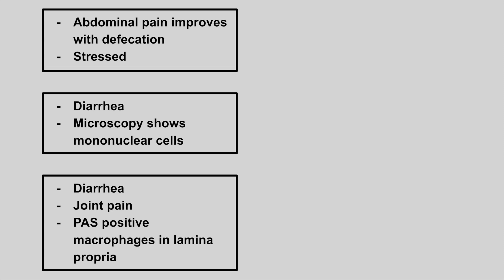The next patient has abdominal pain that improves with defecation and they're stressed — this is irritable bowel syndrome. The next patient has diarrhea and microscopy shows mononuclear cells — this is microscopic colitis. Remember, all testing is going to be normal, but on microscopy findings you'll see inflammation.